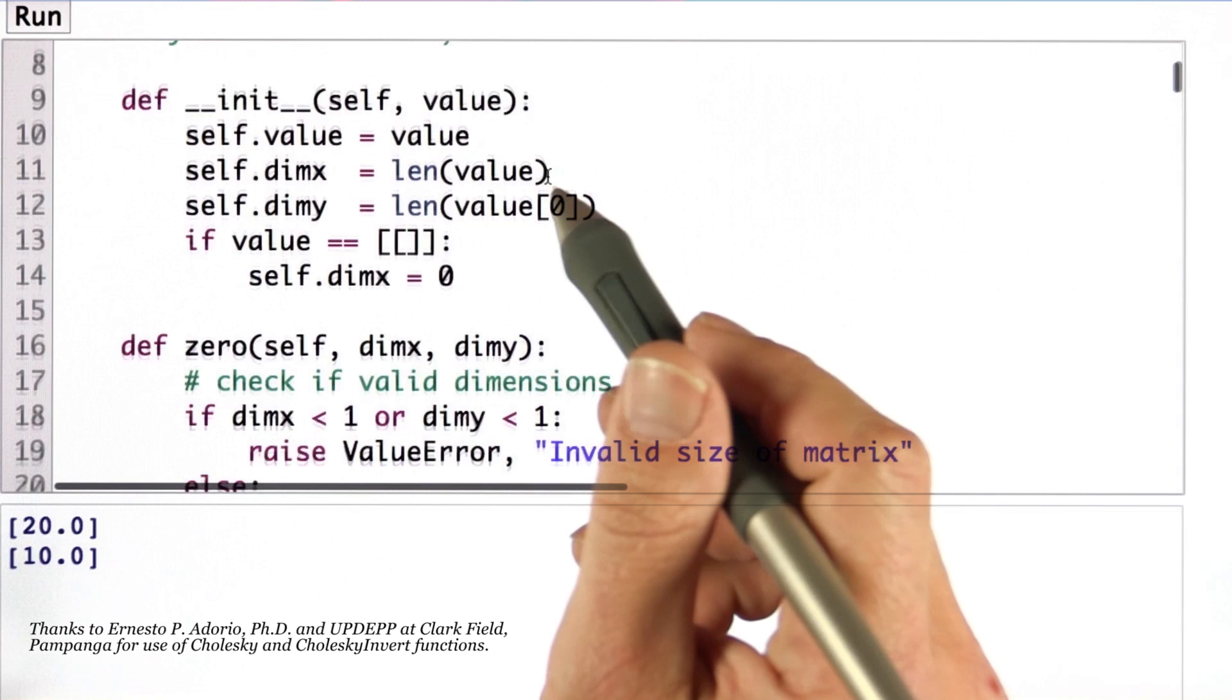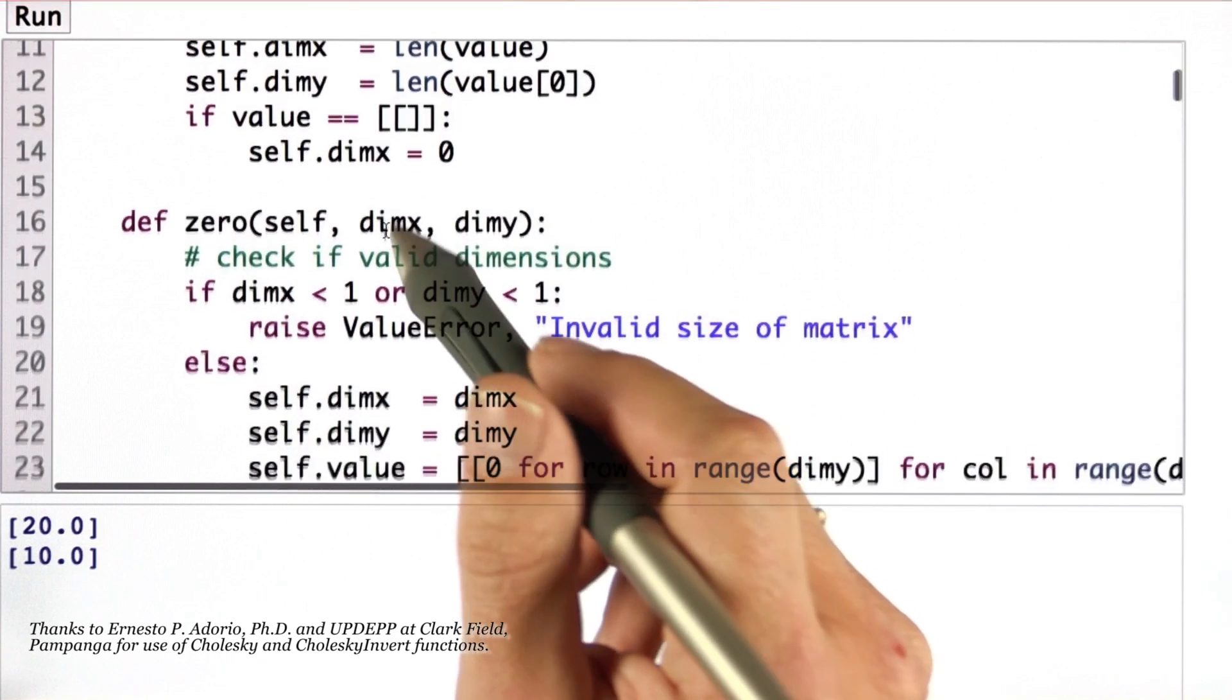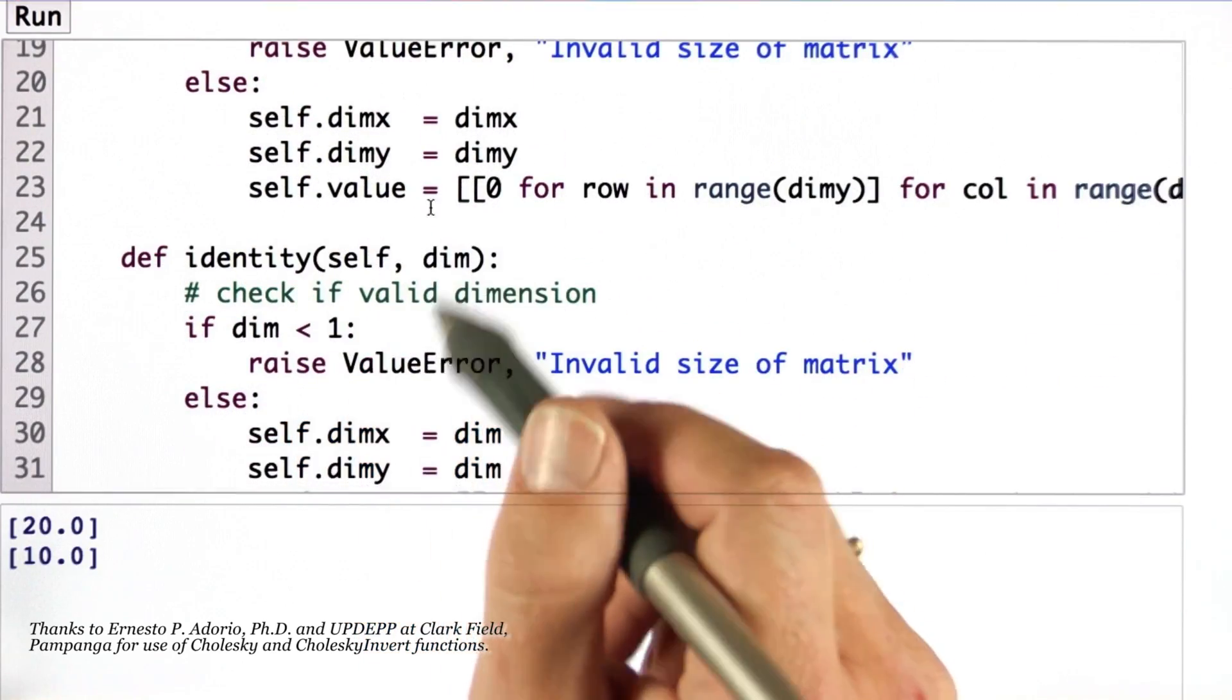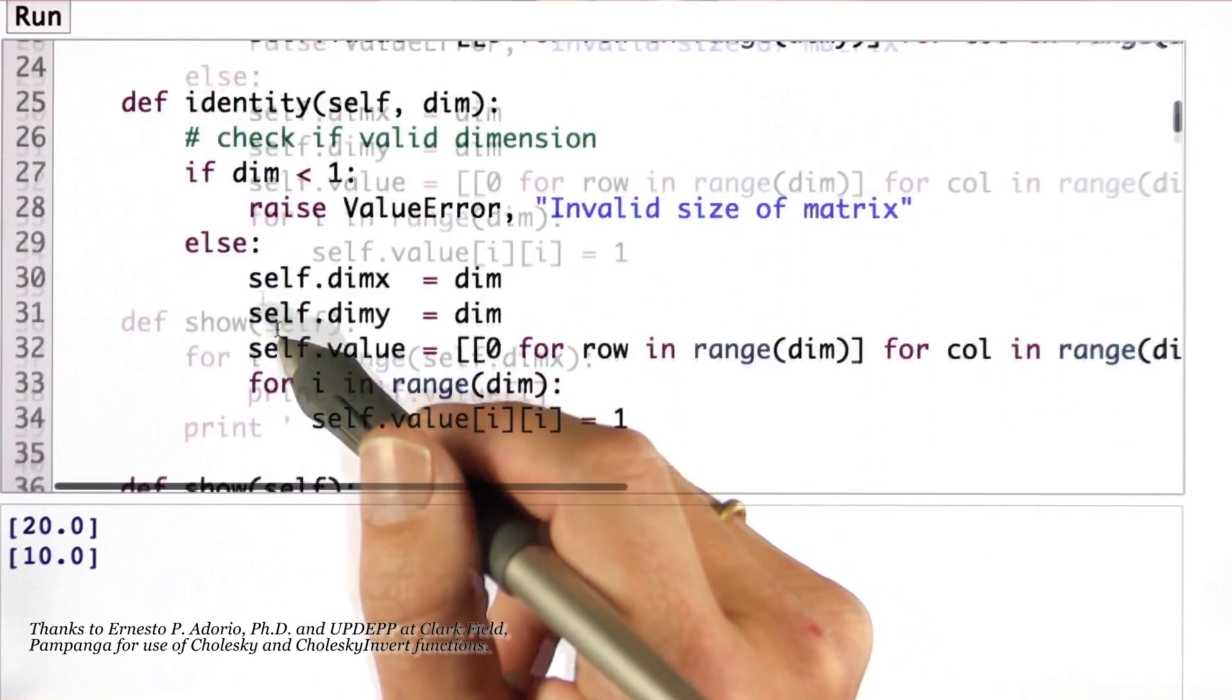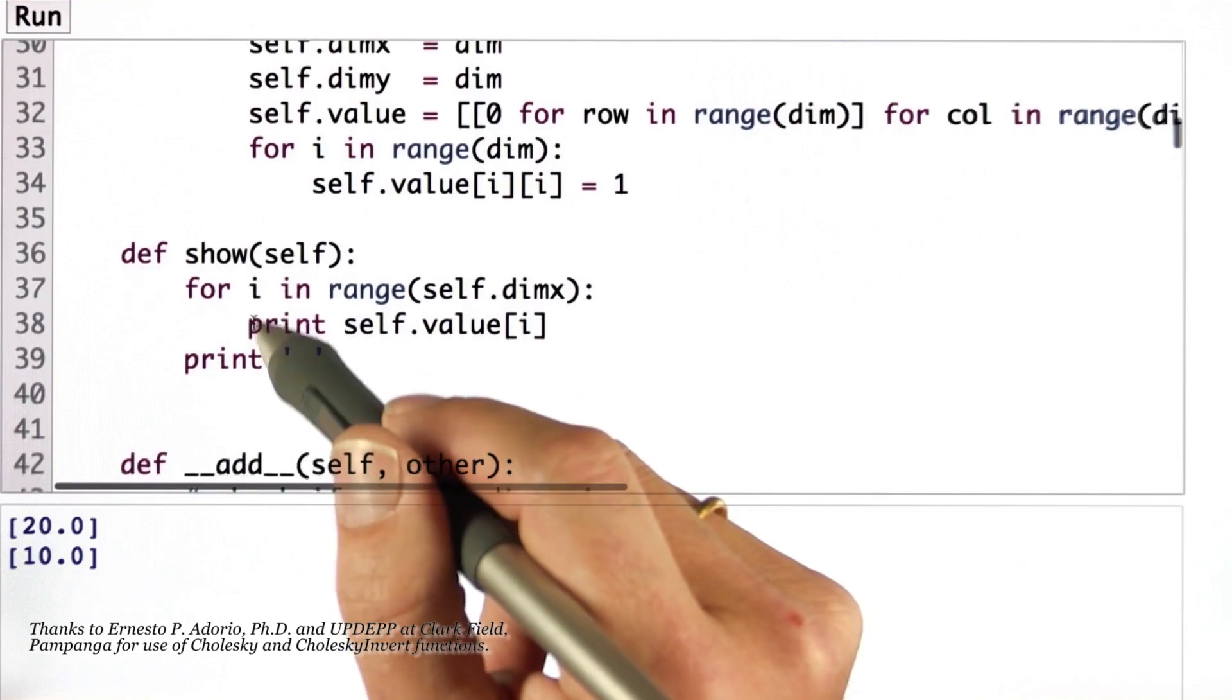The matrix class is a class for manipulating matrices that should make it really easy. It has a function that initializes matrices. I'll show you an example in a second. It can set them down to zero, compute an identity matrix, and print out a matrix with show.